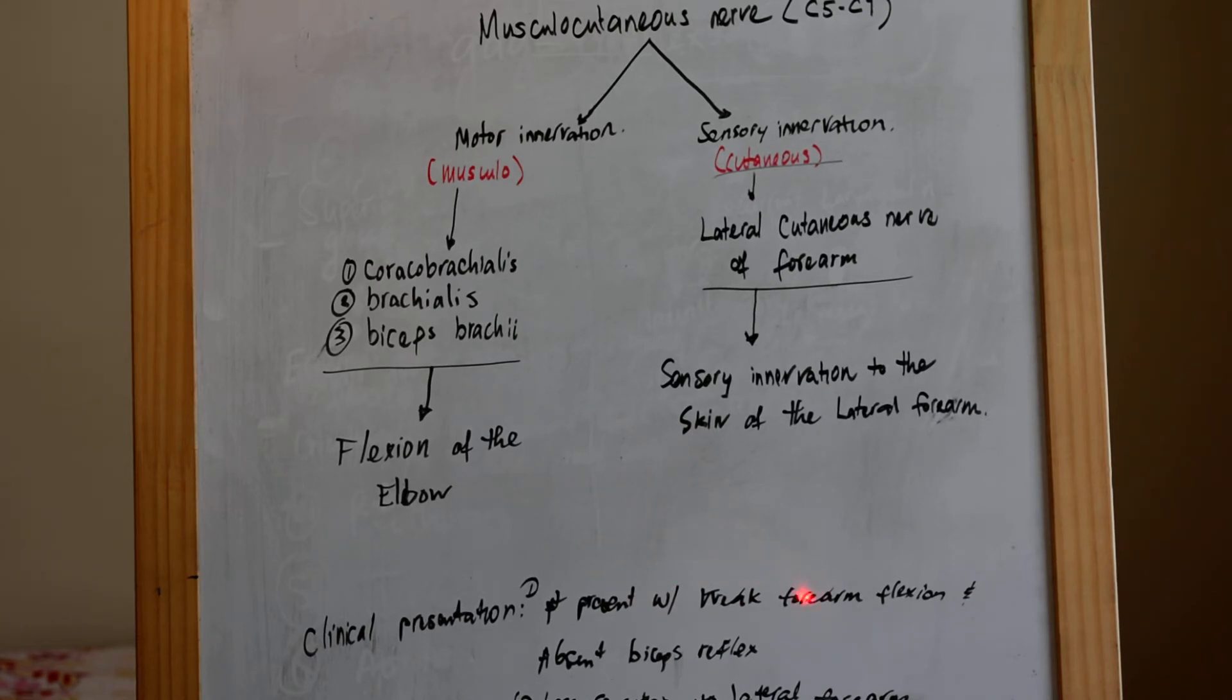Or there's a loss of sensation to the lateral forearm. So on the USMLE, the questions may ask you to associate the nerve and its clinical presentations, or they can ask about the clinical presentations associated with the nerve damage.